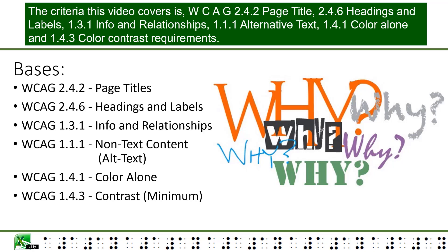The criteria this video covers is WCAG 2.4.2, page title; 2.4.6, headings and labels; 1.3.1, info and relationships; 1.1.1, alternative text; 1.4.1, color alone; and 1.4.3, color contrast requirements.